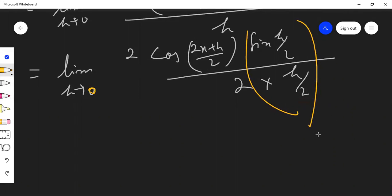So this is equal to 2 cos x into 1 because limit theta tends to 0 and sin theta by theta is equal to 1.